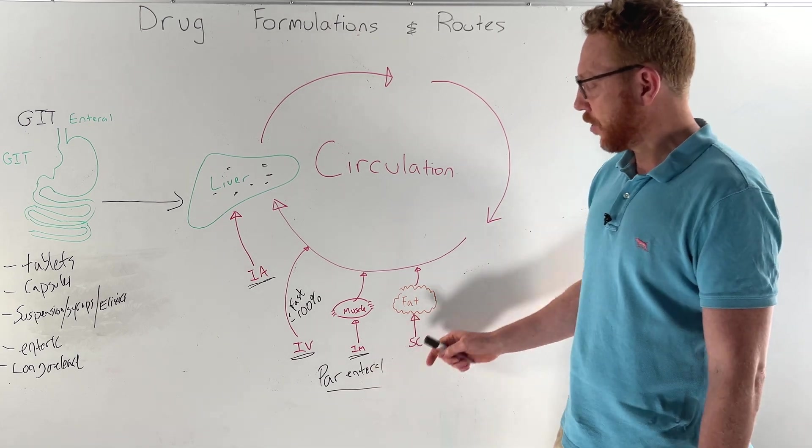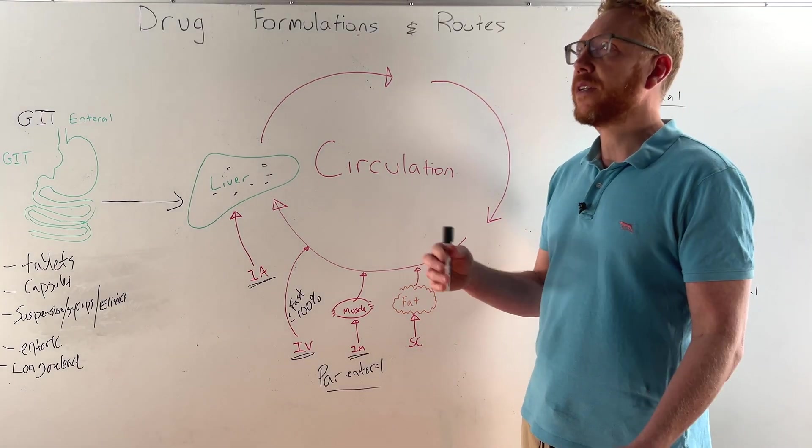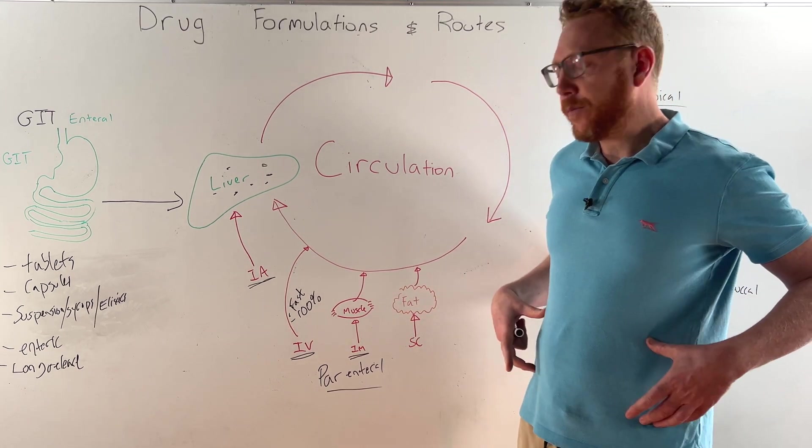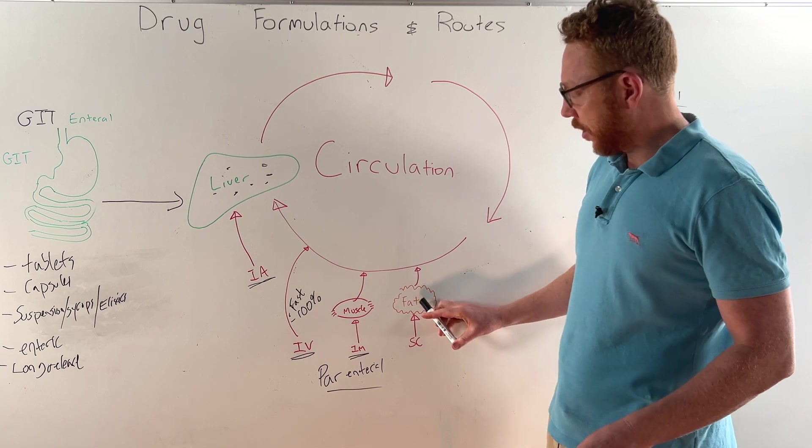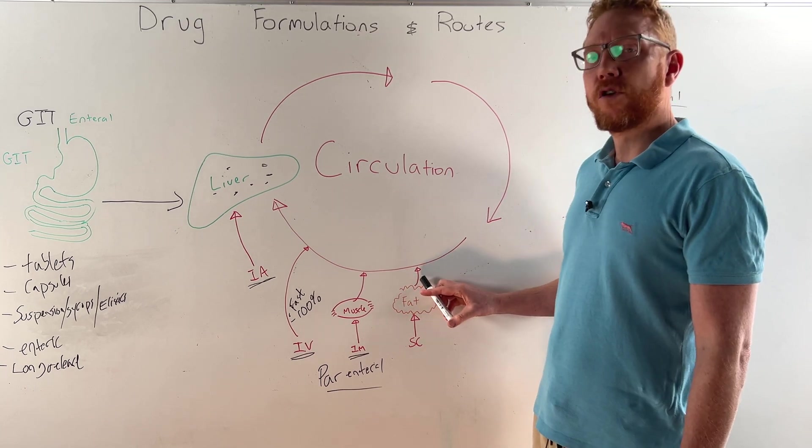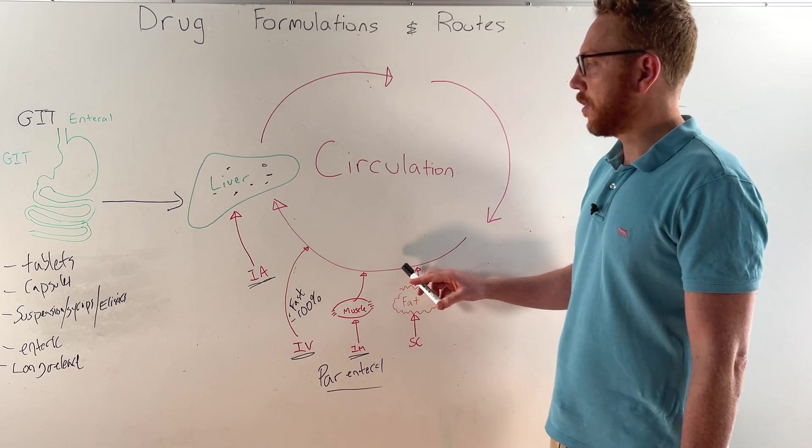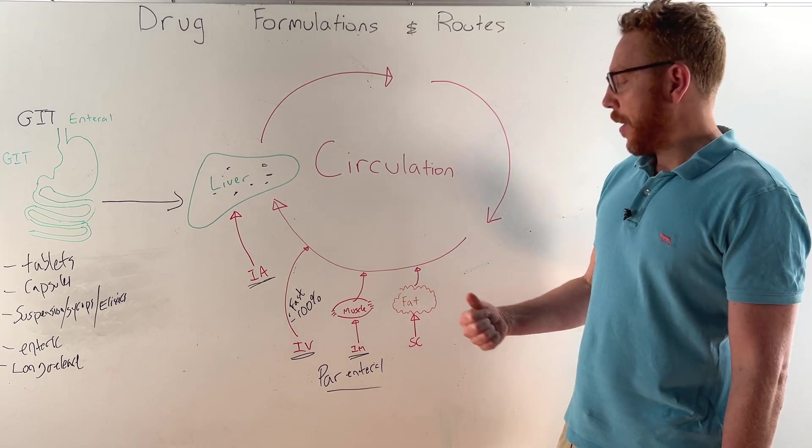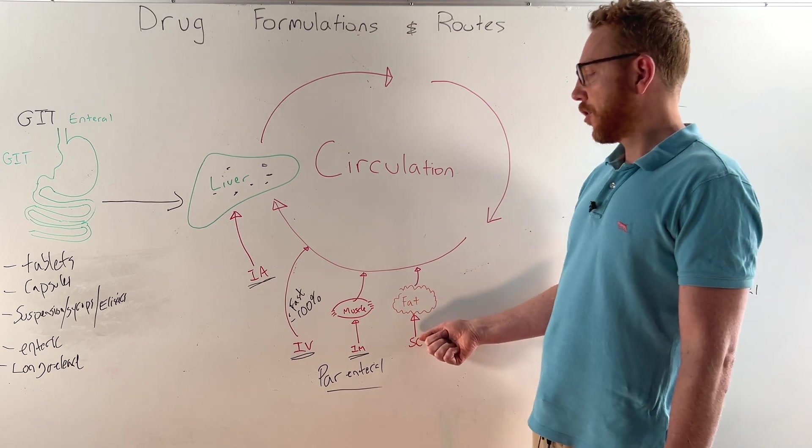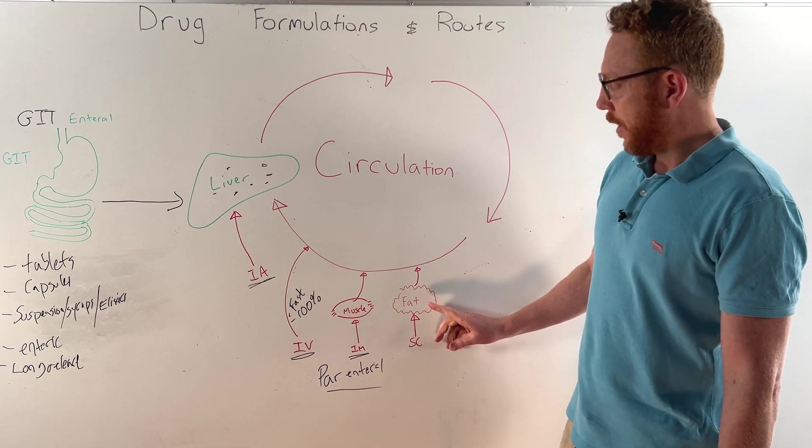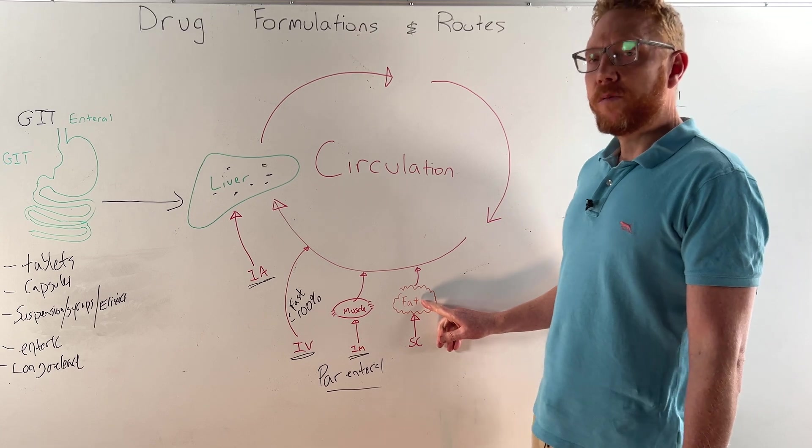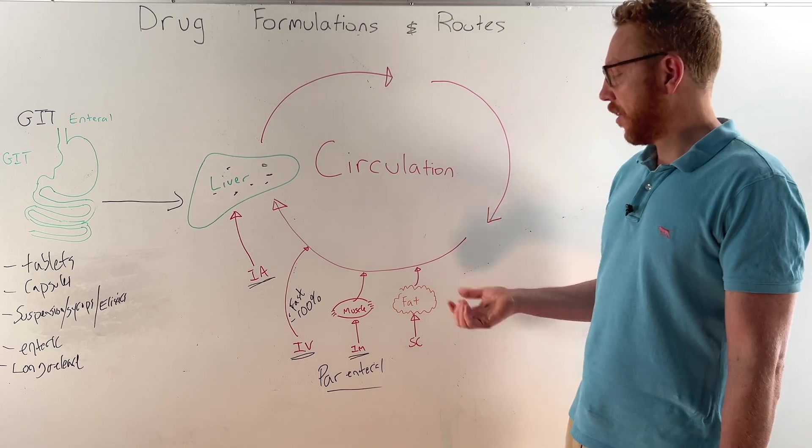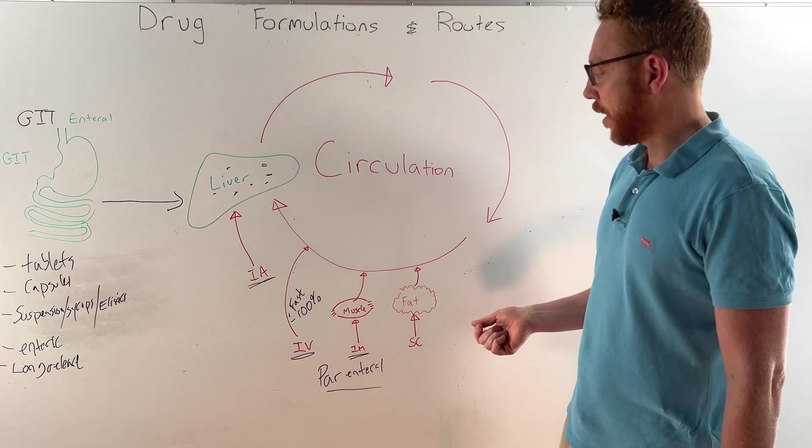Finally in terms of parenterals, we have subcutaneous, which basically means under the skin. This injection goes, for instance, around the abdominal region straight into the fat. The injection goes into the fat, has slower absorption, then slowly gets absorbed into the circulation with slower onset. Insulin and heparin are good examples of subcutaneous administration. Probably less volume can be put in compared to muscle, but the advantage of subcutaneous is the patient can do it themselves at home. They don't need to be in a particular location for that.